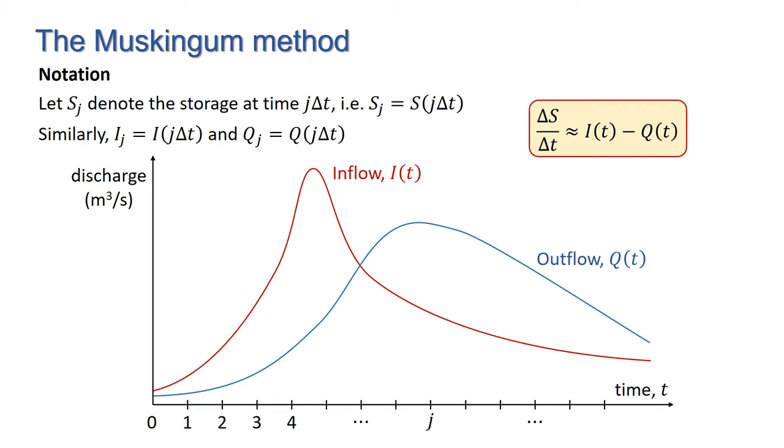To help visualize what this means, let's look again at our inflow and outflow distributions. At time step j, we want values for i and q. Normally, we know what the inflow distribution is, thus we know i_j, but not q_j.